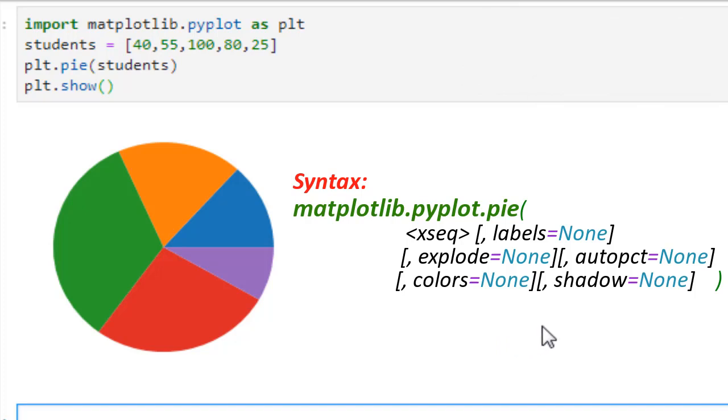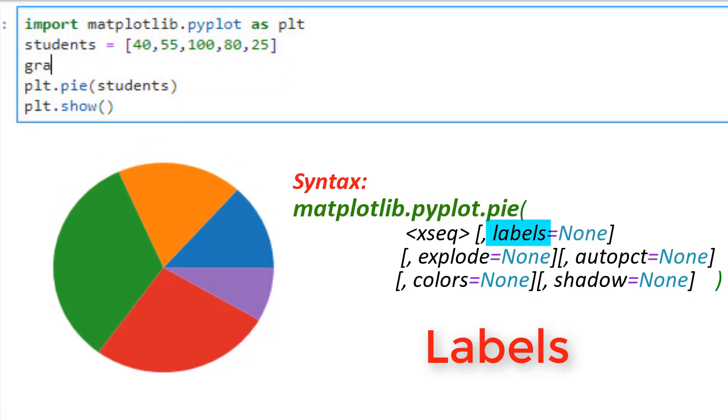Now we need to start formatting it as per the question. First thing missing is labels. If we go back to syntax, we see it takes in another sequence for labels. So we will create a list of labels and add it to the pie command.